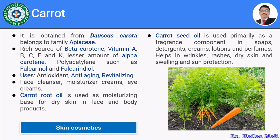Carrot root oil is used as a moisturizing base for dry skin in face and body products. Whereas carrot seed oil is used primarily as a fragrance component in soaps, detergents, creams, lotions and perfumes, and helps with wrinkles, rashes, dry skin and swelling. It also gives sun protection.